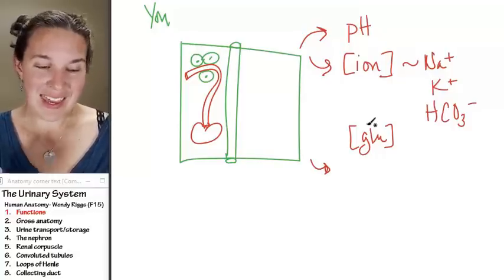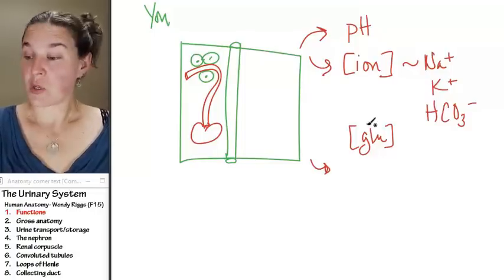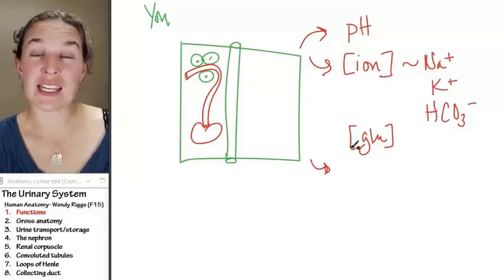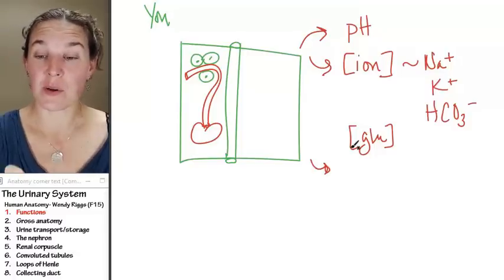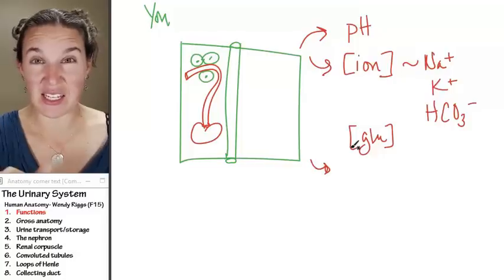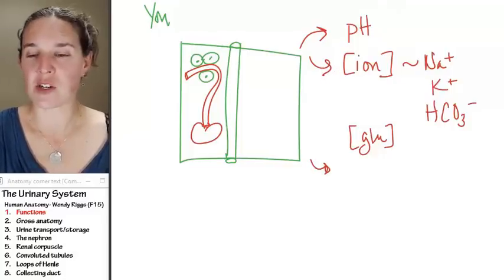I think where we're going to start is we're going to look at the gross anatomy of a single kidney, and then we're going to look in at the cellular pieces in our kidney that are functioning as filters. All right, gross anatomy first. Here we go.